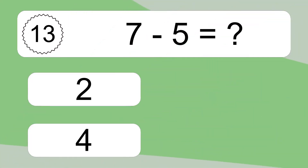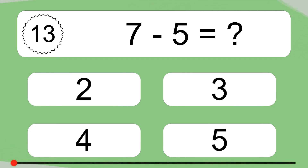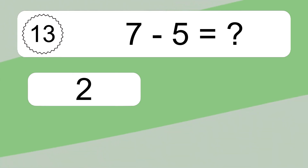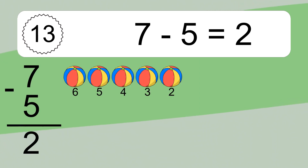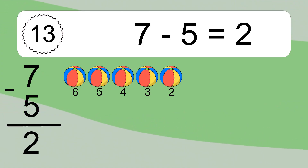7 minus 5 equals what? 7, 6, 5, 4, 3, 2.